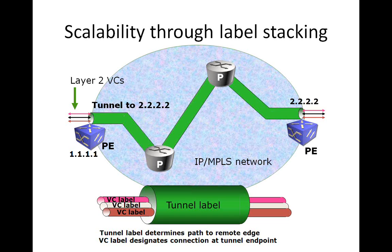The circle in blue represents the service provider network. This is MPLS-based, so the service provider builds tunnels from each of the edge nodes to all the other edge nodes — in this case from the P on the left to the P on the right. The tunnel is represented in green.